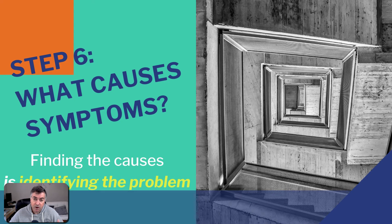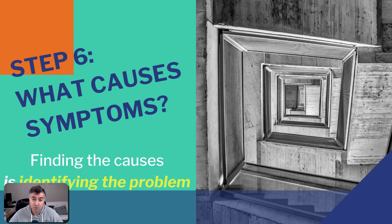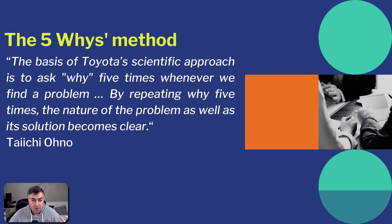Step seven of our process is: what causes the symptom? We have listed symptoms that impact a specific population. It's important now to know what are the causes of these symptoms. Because if we find the cause, then we identify and quantify the problem and know its roots. To do that, we can adopt different methods — there are several methods used in marketing and industry.